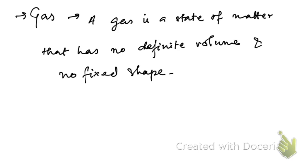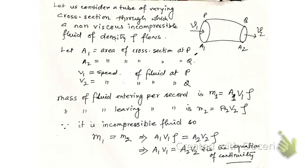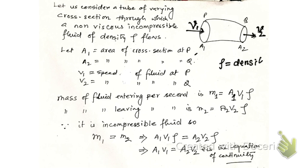Now let me derive the equation of continuity. I have considered a tube with a varying cross-section. At one end P, the area of cross-section is A1, and at end Q, the area is A2. The fluid enters with velocity v1 and leaves with velocity v2. Let rho be the density of the fluid in the tube.